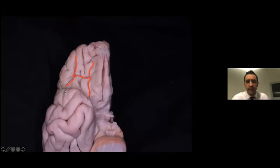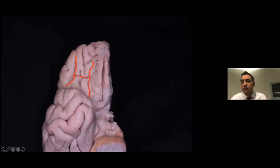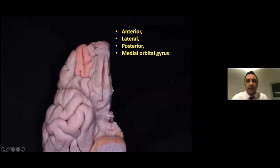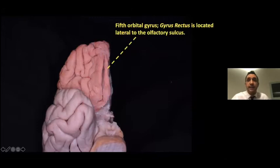On the inferior surface of the frontal lobe, the olfactory bulb and the concave area lateral to the tract contain a series of sulci that together form an H-shaped configuration. These H sulci divide this area into four orbital gyri: anterior, posterior, medial, and lateral orbital gyrus. The fifth orbital gyrus, the gyrus rectus, is located lateral to the olfactory sulcus.